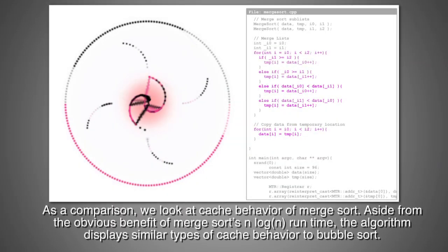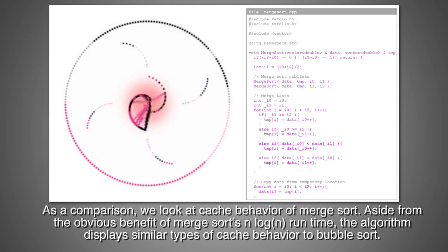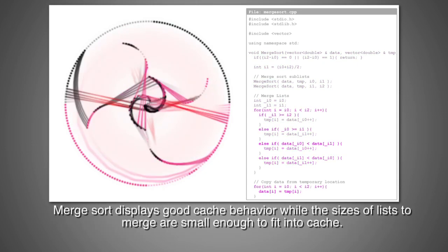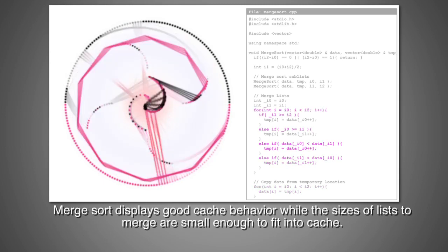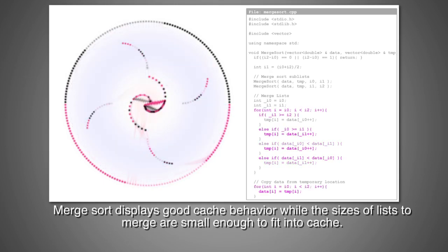As a comparison, we look at cache behavior of merge sort. Aside from the obvious benefit of merge sort's n-log-n runtime, the algorithm displays similar types of cache behavior to bubble sort. Merge sort displays good cache behavior while the sizes of lists to merge are small enough to fit into cache.